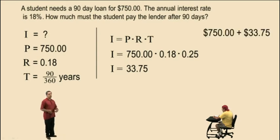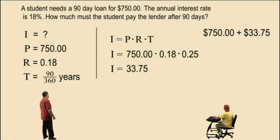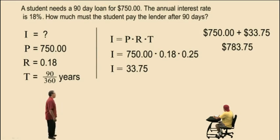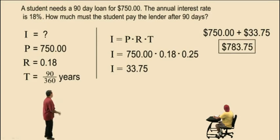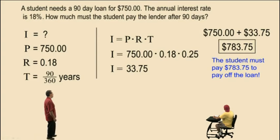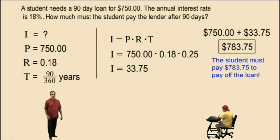So how much does the student have to pay back after 90 days? He borrowed $750, and the interest is $33.75, so the total is $783.75. The student must pay $783.75 to pay off the loan after 90 days.